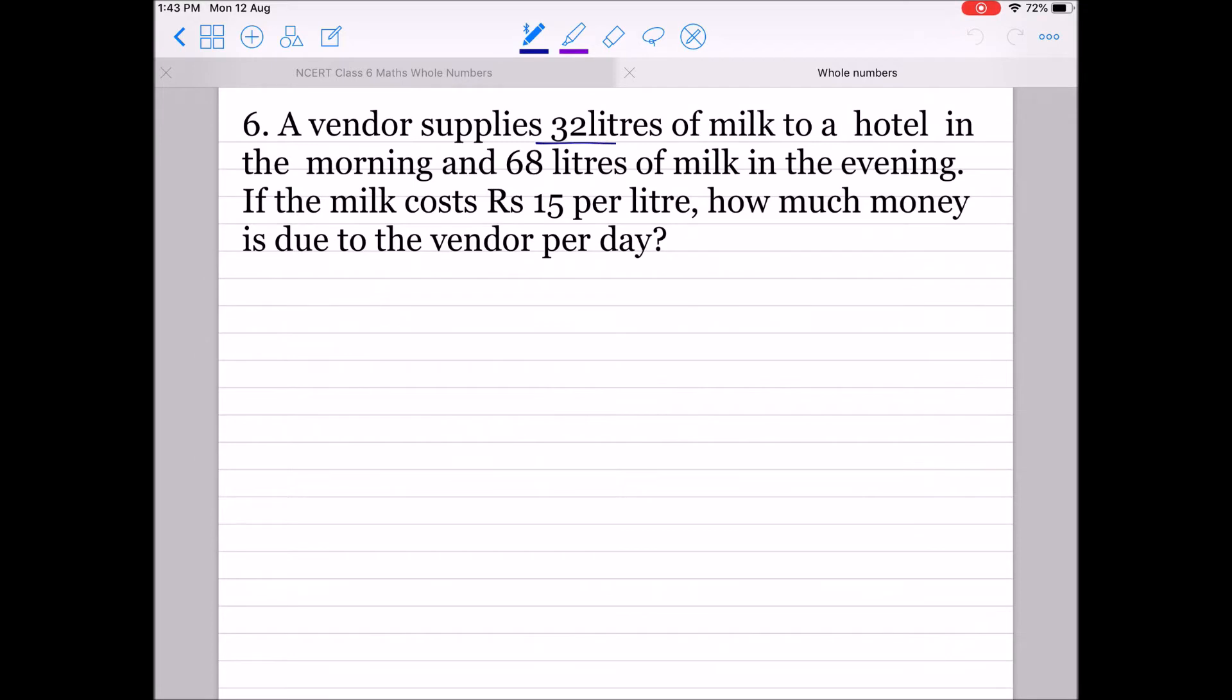We have 3 things given: 32 liter milk quantity, 68, and Rs 15 per liter. This question can be solved with and without the distributive property. First, we'll solve without the distributive property. Cost of 1 liter equals Rs 15.